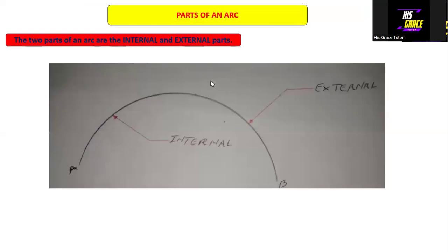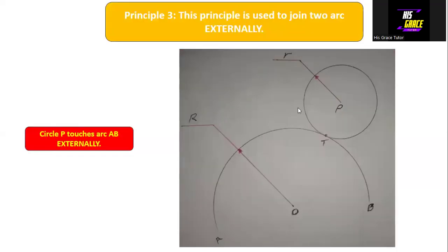I've shown you this diagram before in Principle Two, where we looked at parts of an arc. As I said, we have two parts of an arc: we have the internal part and we have the external part, as you can see in this diagram. This is the internal part of an arc and this is the external part of an arc.